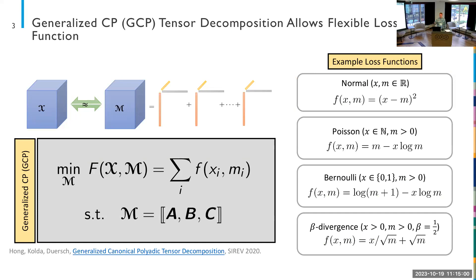The GCP is a generalization to an arbitrary loss function F, which may be derived by maximum likelihood estimation or may not. A key difference when going to other distributional assumptions is that the low-rank model may no longer be directly approximating the tensor — it's approximating the tensor-valued parameter of the distribution. For the binary case, we're using a loss function where we're approximating the odds ratio of observing a zero or one. The tensor values are zero or one, but the low-rank model can take any arbitrary non-negative value.